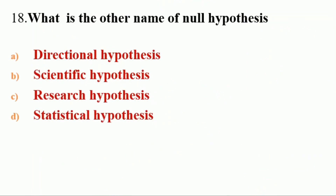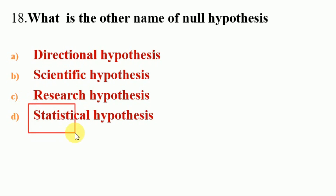Next question: what is the other name of null hypothesis? Options: A. directional hypothesis, B. scientific hypothesis, C. research hypothesis, D. statistical hypothesis. The answer is D, statistical hypothesis. The null hypothesis states the existence of no relationship between the variables.